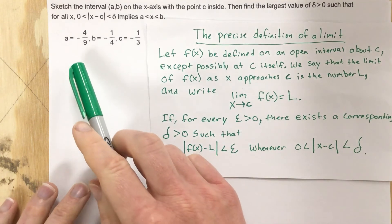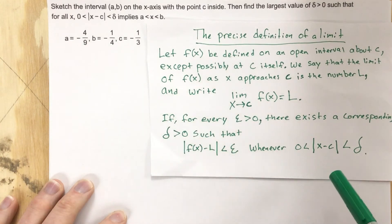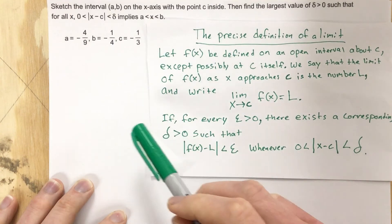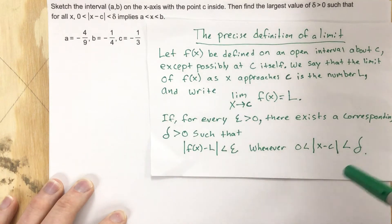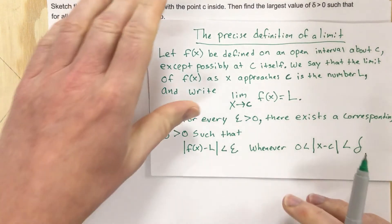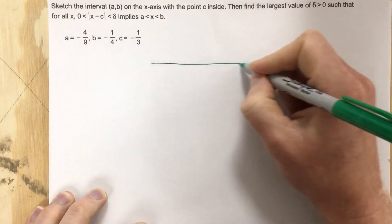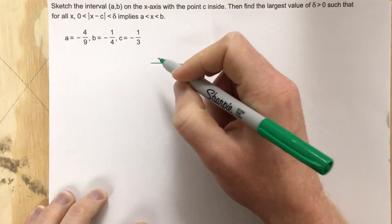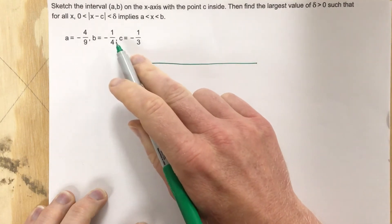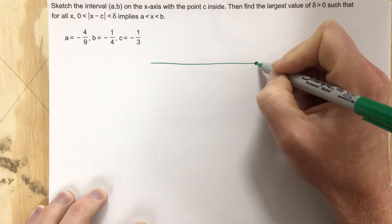So in this problem they're essentially saying write these on a number line and then pick the right number for delta. We always want to go with the smaller number of the two numbers we get. So let's go ahead and write this out. We'll make a number line and we'll mark a and b, and they say c is in the middle. So b is here and b is negative one over four.